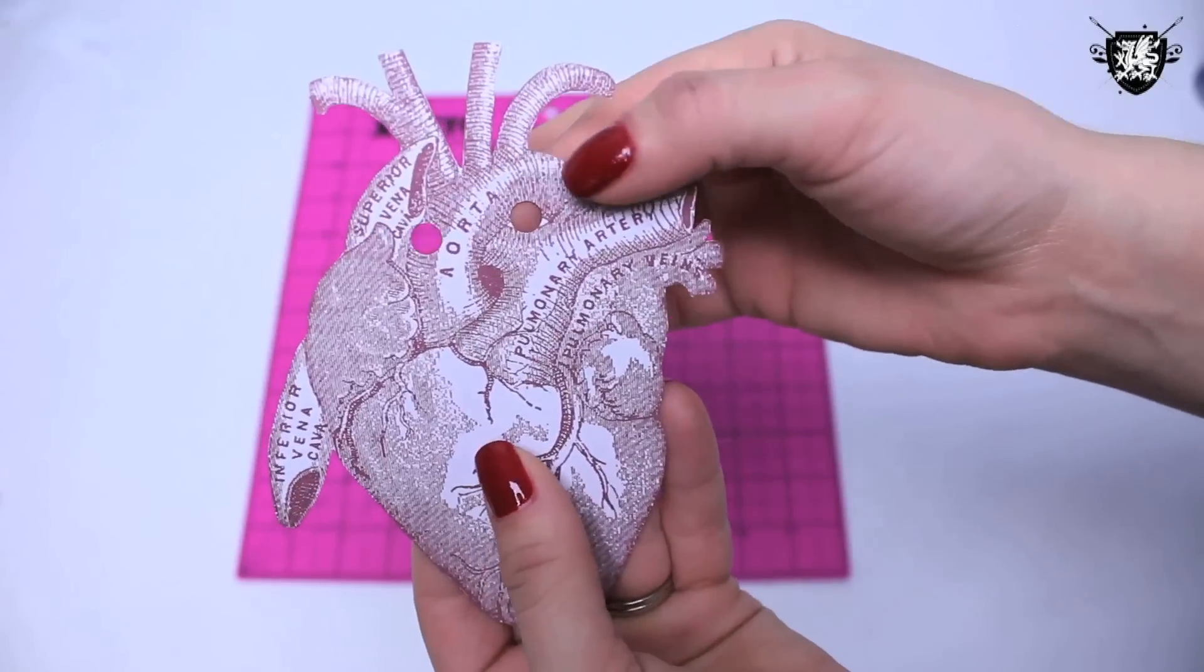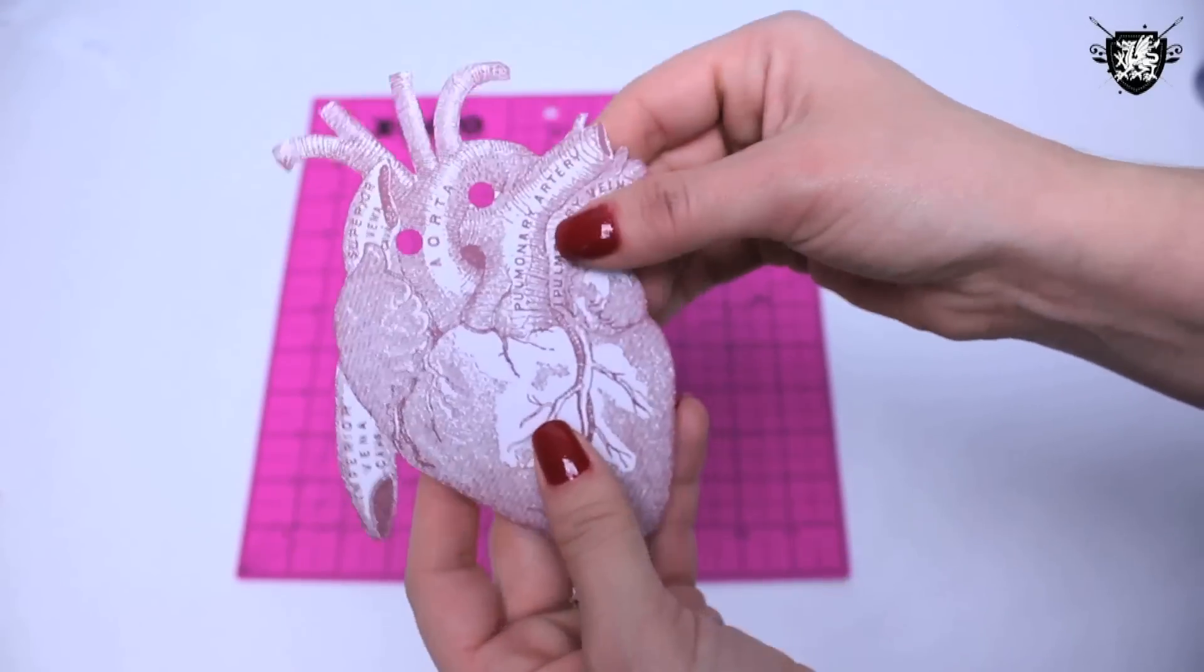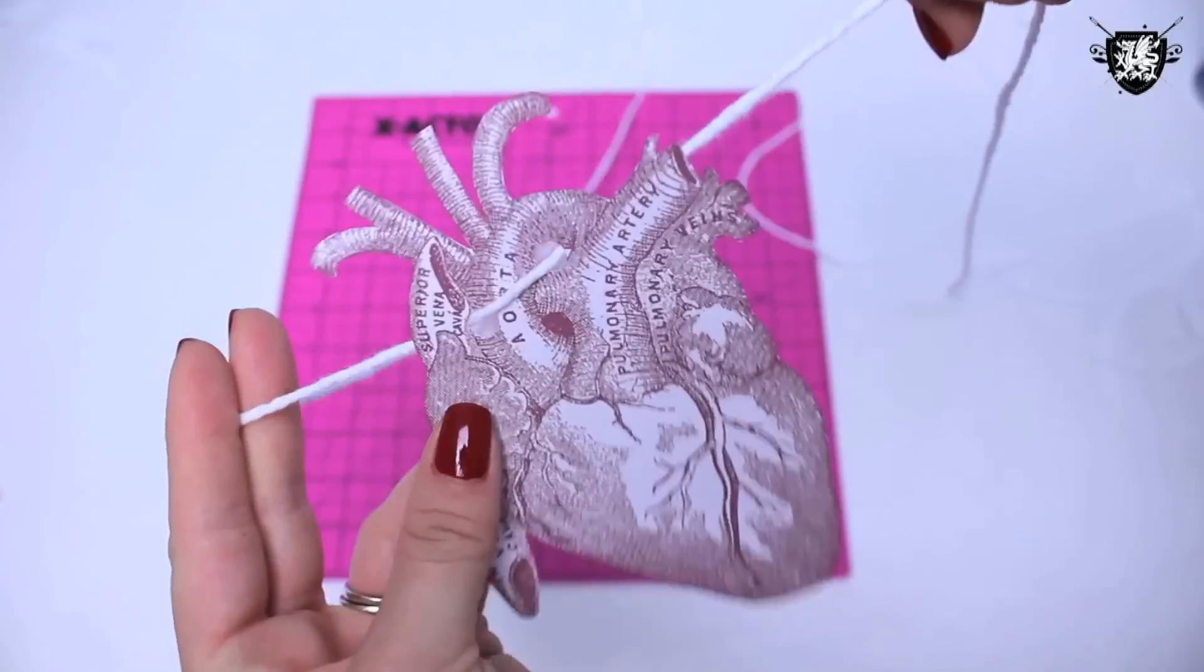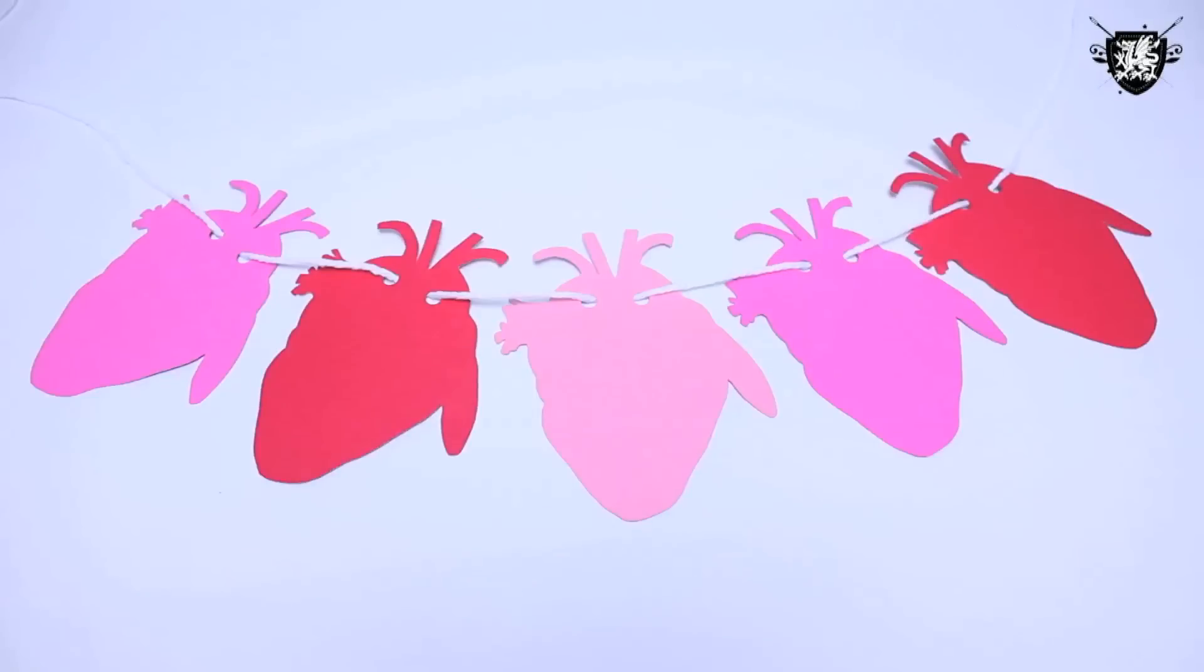I also use that heart template to create a garland. Just attach the images to different colors of cardstock, make some holes with a hole puncher, and string them up on a thin piece of yarn. And you have a garland that's neato from both sides.